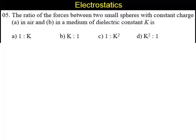Alternatives are: 1 is to K, K is to 1, 1 is to K square. The last choice is K square is to 1. Again, this is a problem on Coulomb's law.